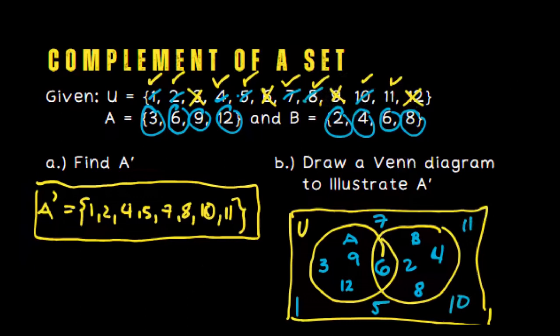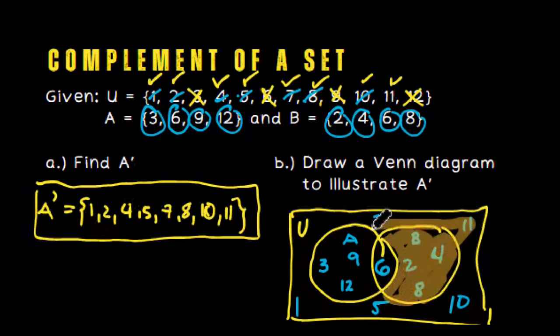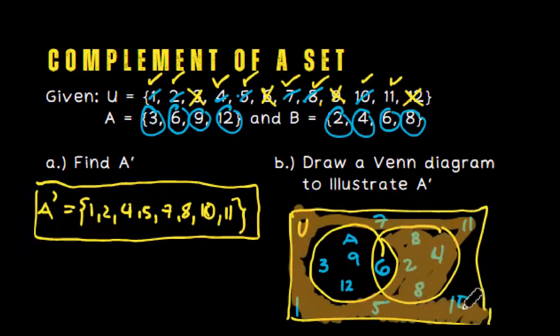The complement of a set doesn't include A, right? So we'll shade everything outside of A, starting here in set B, and also all the elements in the universal set. This is how we shade it, except for set A.